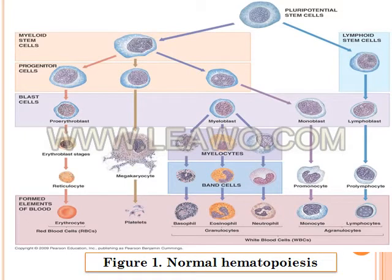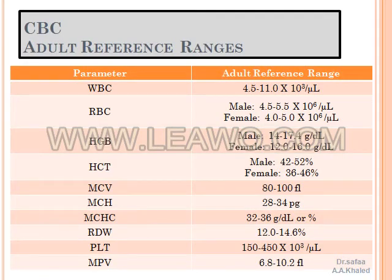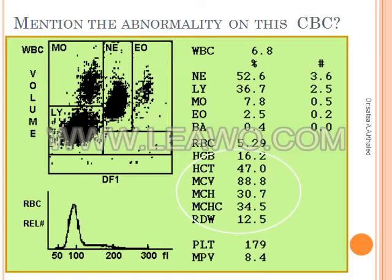This figure shows normal hemopoiesis. As you see, the pluripotential stem cells give rise to two stem cells: myeloid stem cells and lymphoid stem cells. All blood cells originate from the myeloid stem cell except for lymphocytes. Now you should also know the normal adult reference range of a CBC, or complete blood count. This is a blood picture — we need you to discover the abnormality in this scene.